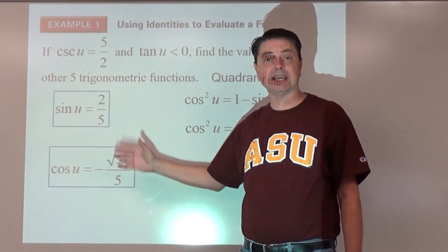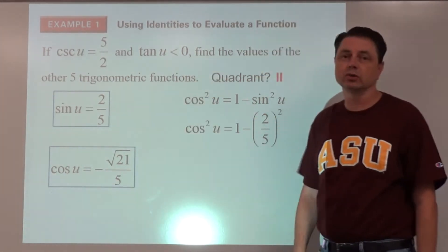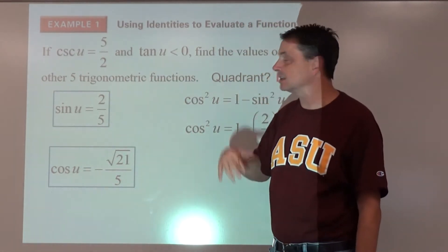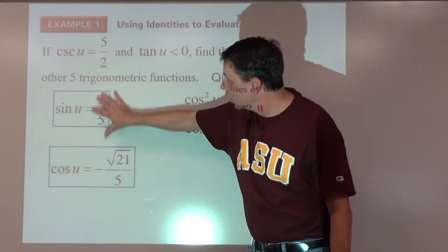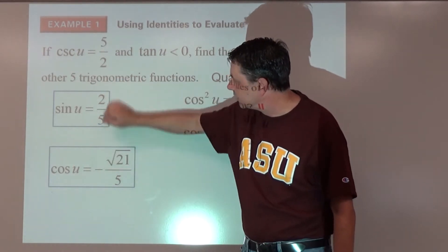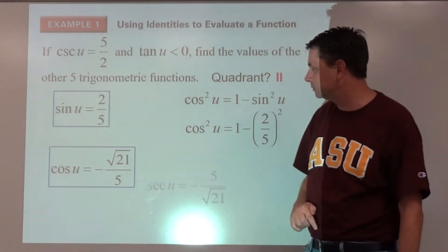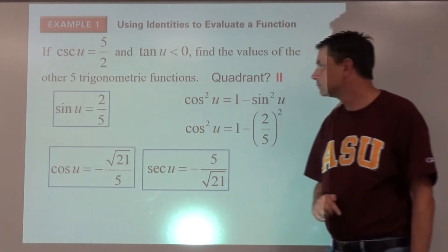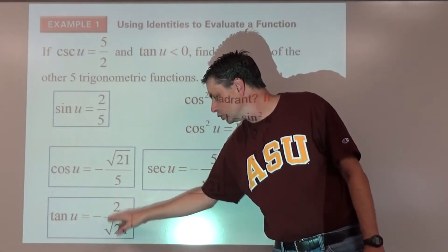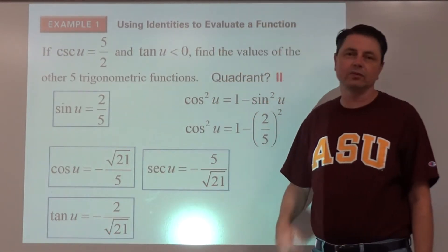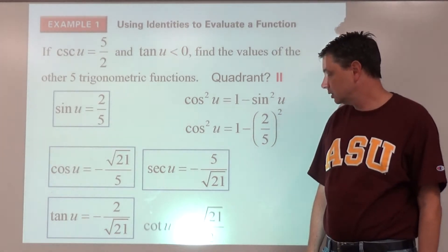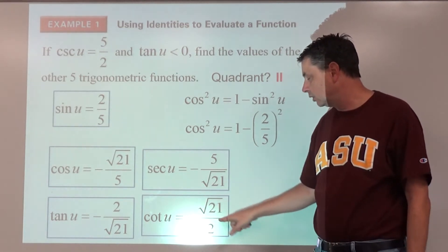Once we have cosine, we get secant from the reciprocal identity. Using the quotient identity — sine over cosine — the fives cancel, giving tangent of u equals negative two over root twenty-one. Flipping that via the reciprocal identity gives cotangent of u equals negative root twenty-one over two.